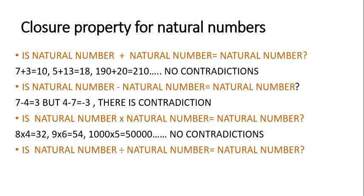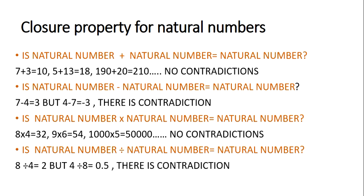But what about division? If I divide a natural number by a natural number, will I get a natural number? In some cases you may get natural numbers but not in all cases, and for closure it must hold for all cases. If there is a contradiction, it will not be closed. For example, 8 divided by 4 is 2, but 4 divided by 8 is 0.5, which is not a natural number. So there is a contradiction, and hence natural numbers are not closed under division.